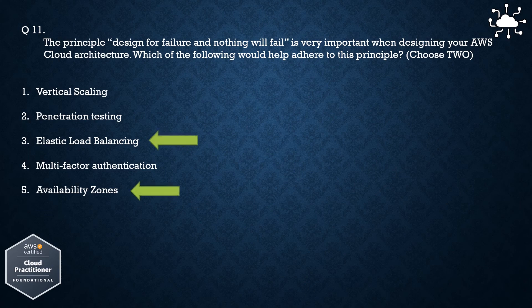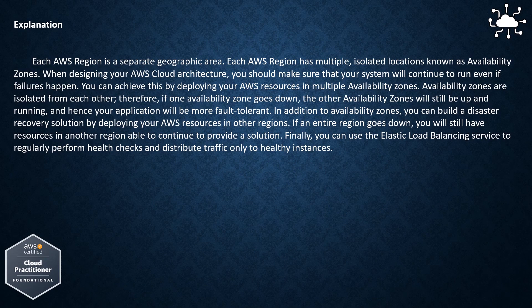The correct answer is Elastic Load Balancing and Availability Zones. Each AWS region is a separate geographic area. Each AWS region has multiple isolated locations known as Availability Zones. When designing your AWS Cloud Architecture, you should make sure that your system will continue to run even if failures happen. You can achieve this by deploying your AWS resources in multiple Availability Zones. Availability Zones are isolated from each other. Therefore, if one Availability Zone goes down, the other Availability Zones will still be up and running, and hence your application will be more fault-tolerant.